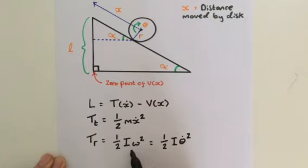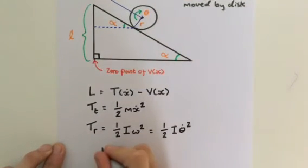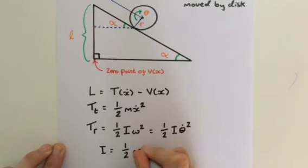But what's I? That's the moment of inertia. I is equal to half m r squared, where m is the mass and r is the radius.